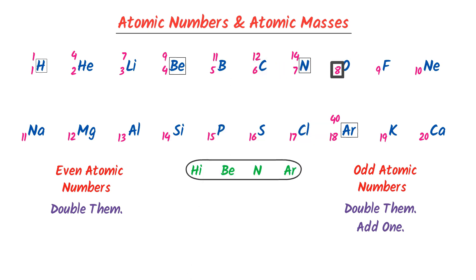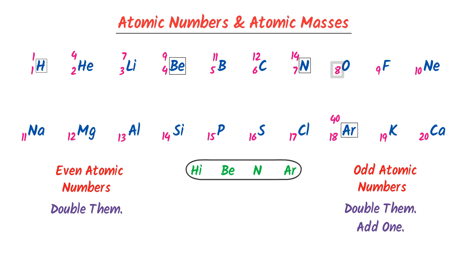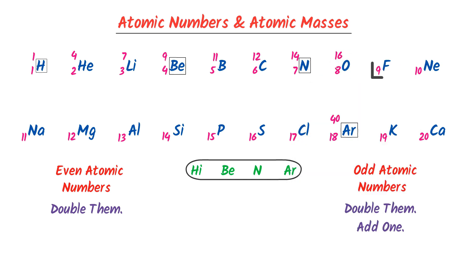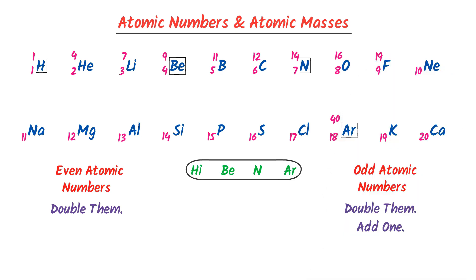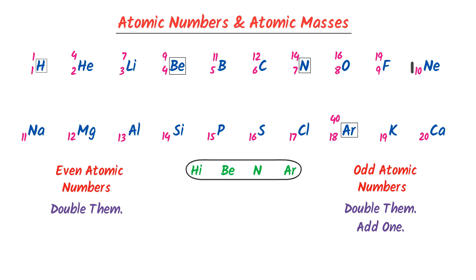The atomic number of Oxygen is 8, so the atomic mass of Oxygen is 16. The atomic number of Fluorine is 9; double it plus 1 equals 19. The atomic number of Neon is 10; double it, which equals 20. The atomic number of Sodium is 11; double it to get 22, plus 1 equals 23.